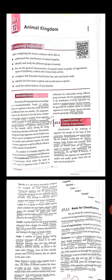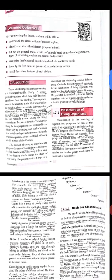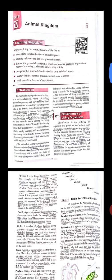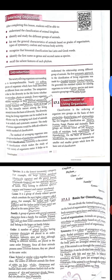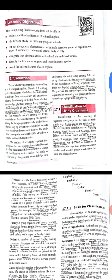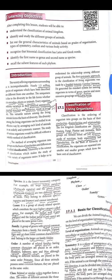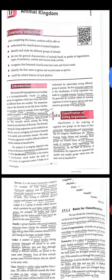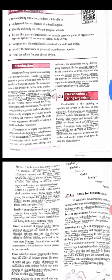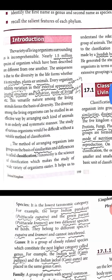There are millions of different animals living in this world. The variety of living organisms surrounding us is incomprehensible. There are nearly 1.5 million species of organisms which have been described as different from one another.